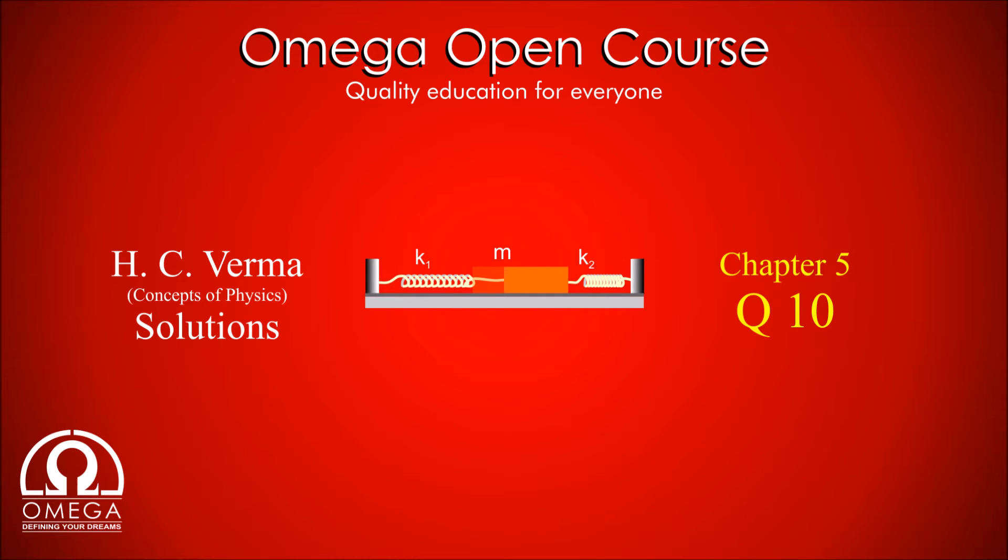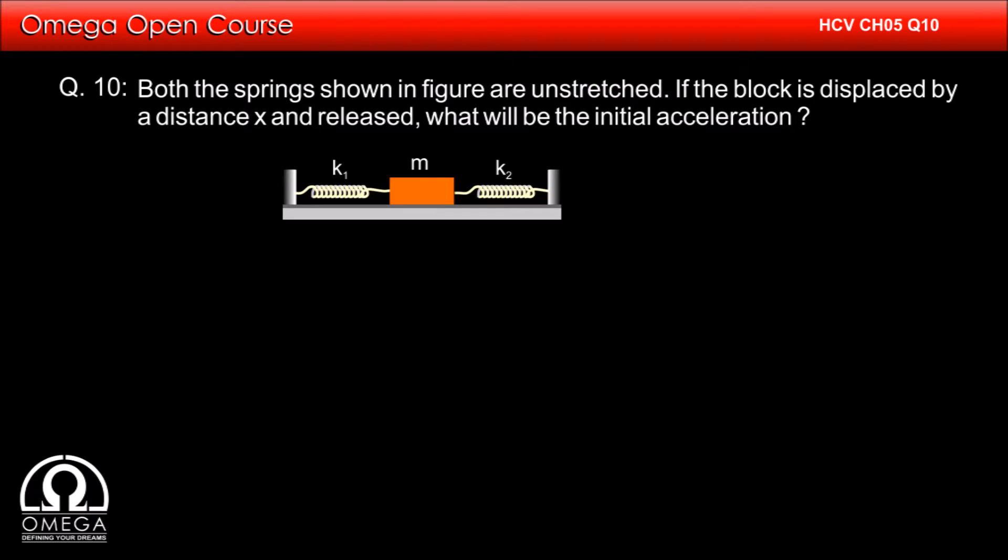H.C. Verma Chapter 5, Question Number 10: Both the springs shown in the figure are unstressed. If the block is displaced by a distance x and released, what will be the initial acceleration?